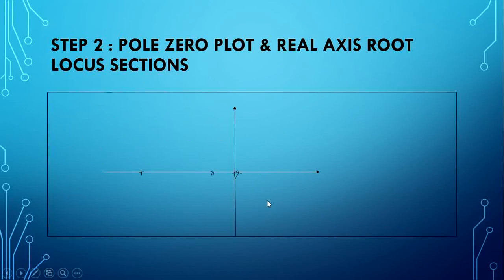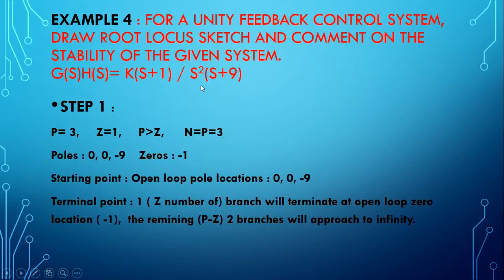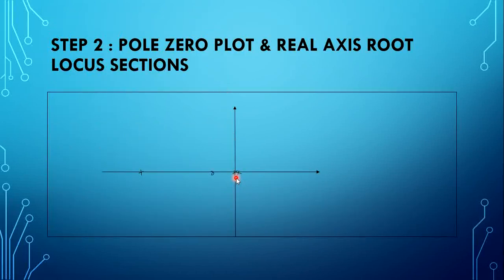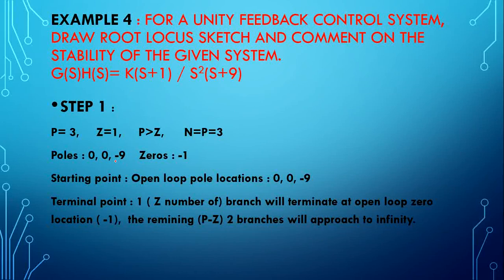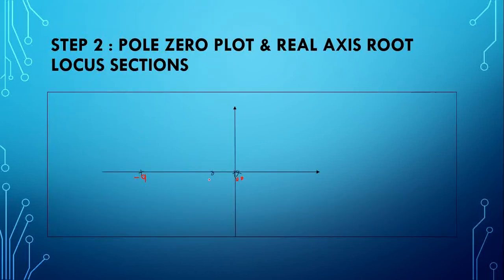Next step: pole-zero plot. Poles are at 0, 0, and -9. Two poles are marked at origin with cross marks (indicating the s² term), and one pole at -9. Zero is at -1, marked with a small circle. Poles are marked with cross marks.